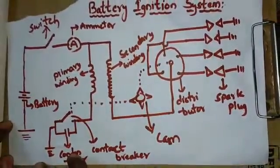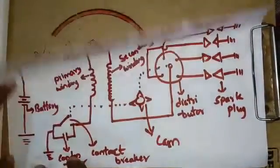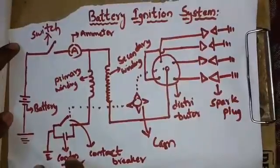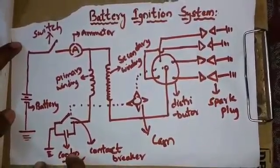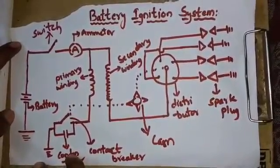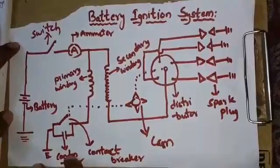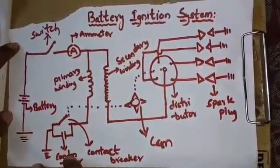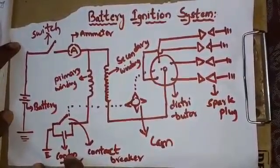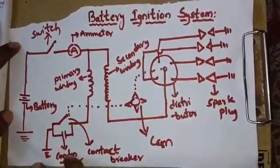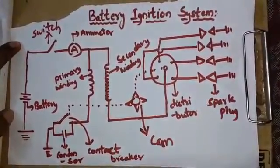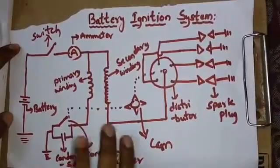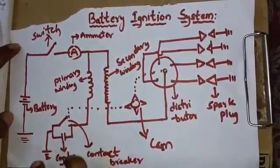I want to explain what is the battery ignition system. The ignition system is required for the operation of an engine because the air-fuel mixture in the piston is ignited by a high voltage spark. The ignition system must provide electrical energy, converting from low voltage to high voltage distributed to the spark plugs.